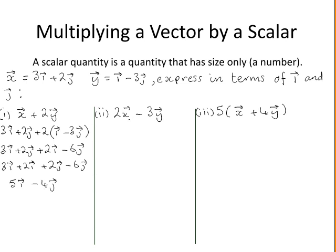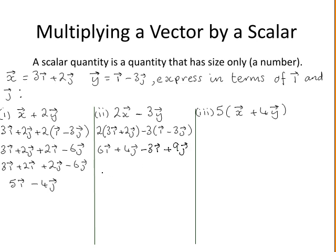In the second part, we are asked to find twice the vector x minus 3 times the vector y. Filling in for vector x and multiplying in — obeying the basic laws of algebra — then grouping like terms together gives the answer.